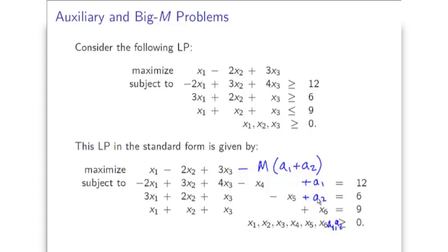This is a very severe penalty for non-zero values of a1 and a2. You'll get a1 or a2 positive in solving this problem only whenever having a1 and a2 both equal to zero is impossible - and when is that impossible? This means the original problem was infeasible. Because if the original problem is feasible, then you have an assignment for x1, x2, x3, x4, x5, and x6 such that by setting a1 and a2 to zero, the system will be satisfied. But if a1 and a2 cannot be zero, then we cannot find a set of x's such that the original system is feasible. We have very tight connections here between the original LP, the auxiliary problem mentioned before, and the big M problem.